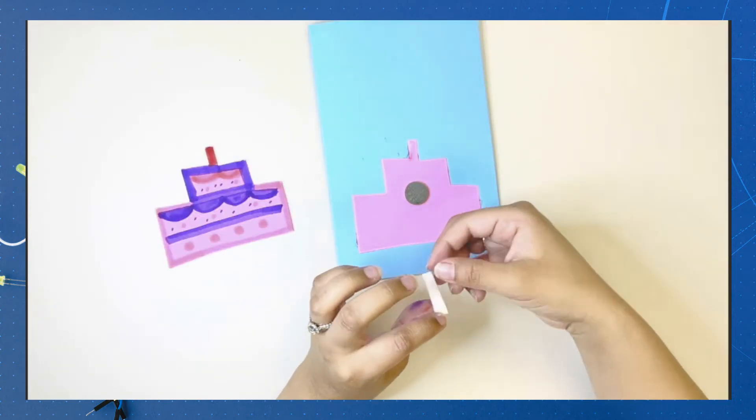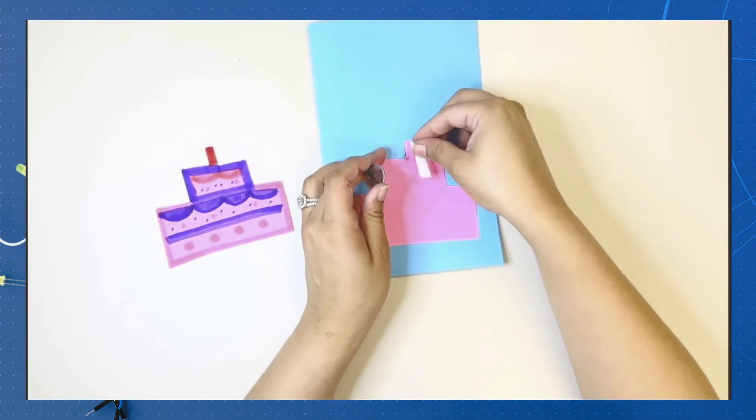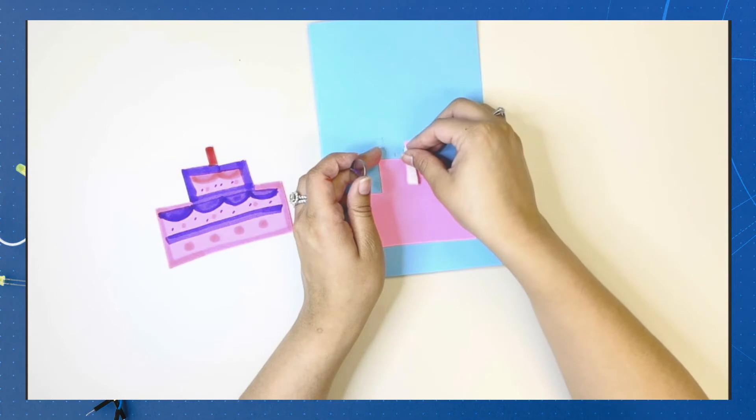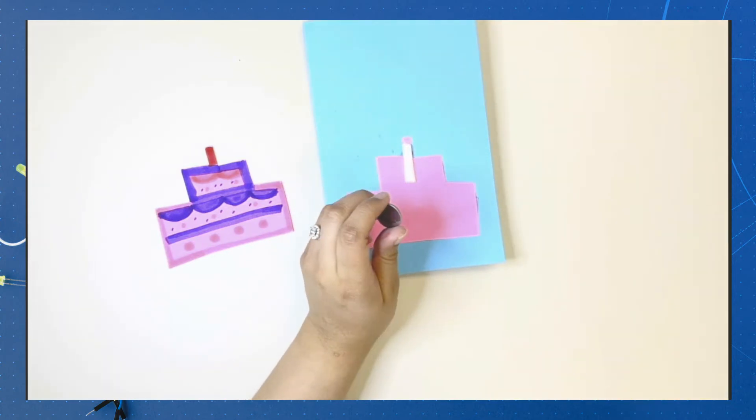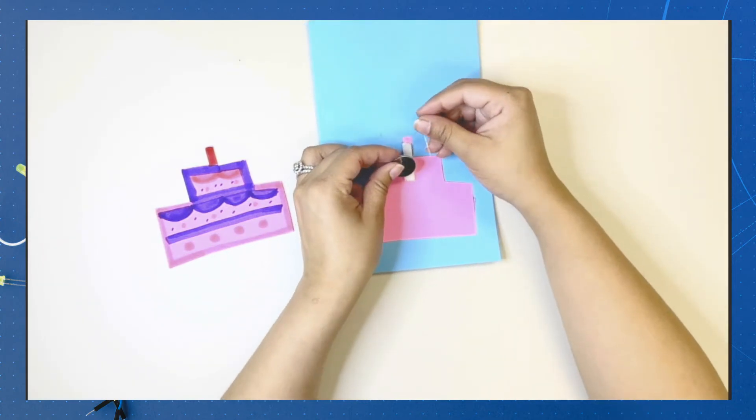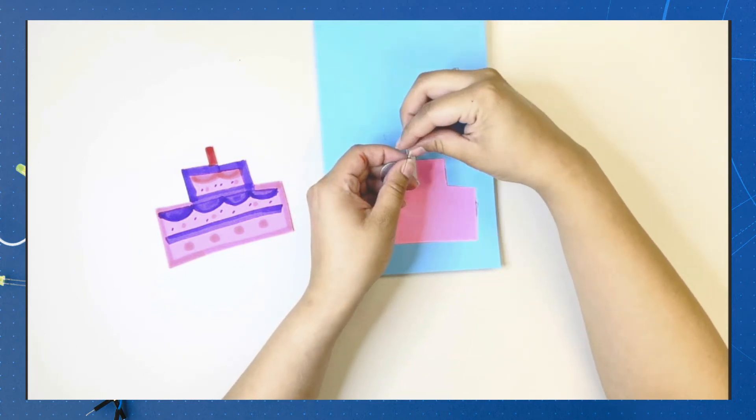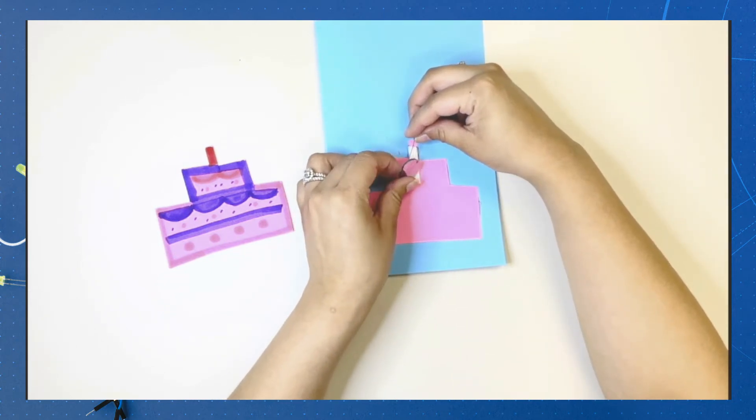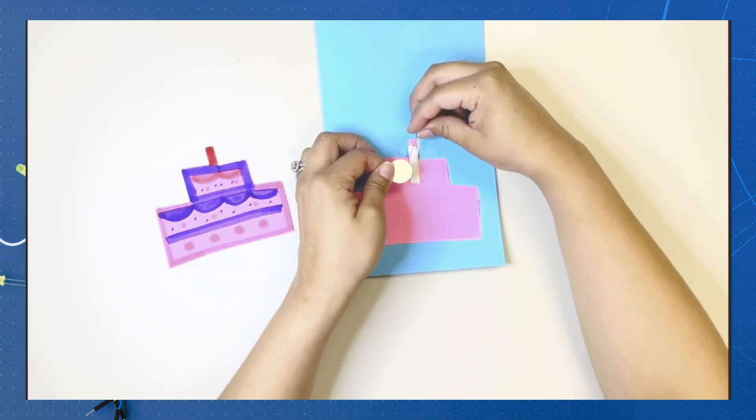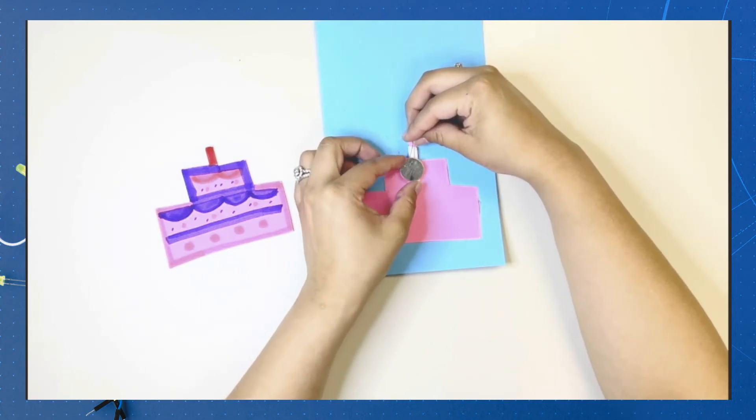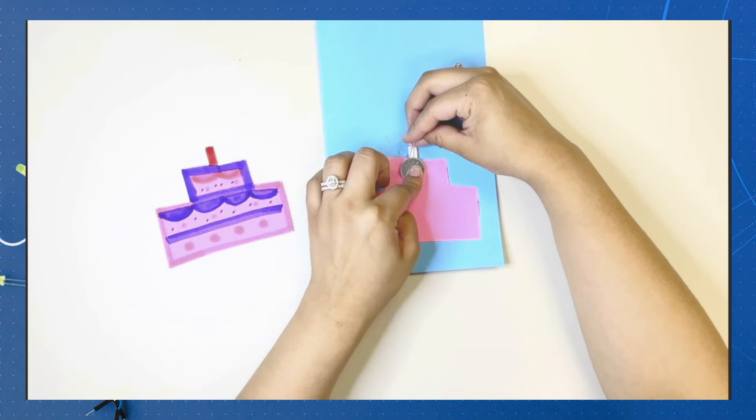Next, we will use our double sided foam tape to attach our LED and coin cell battery. The LED short leg will be at the bottom of our coin cell battery. Remember, the long leg of your LED is the positive side. The positive leg of our LED light will ultimately become the button or the on and off switch of our card.